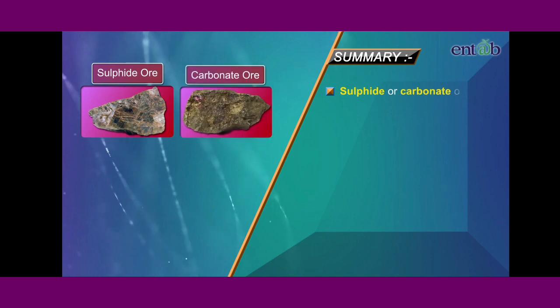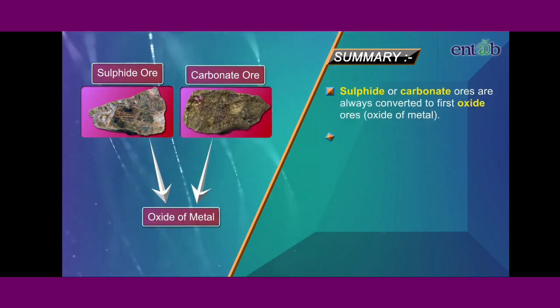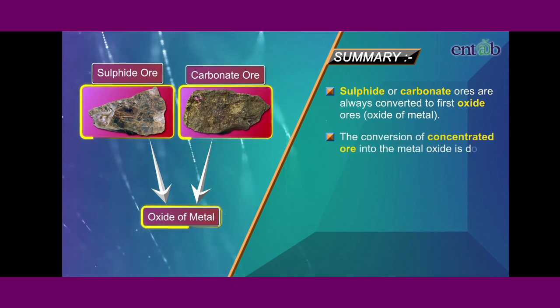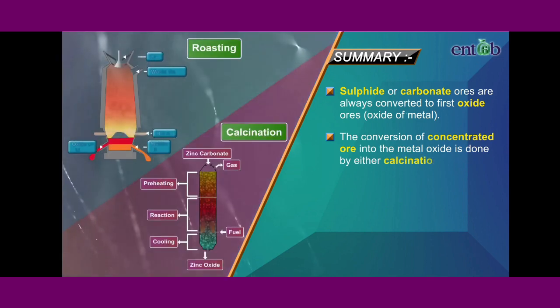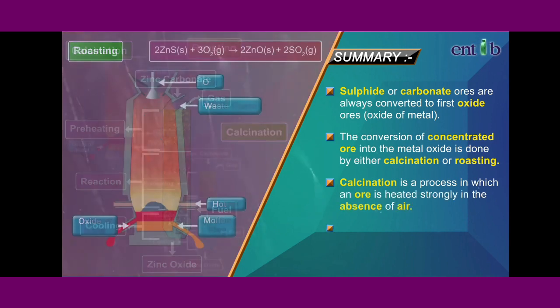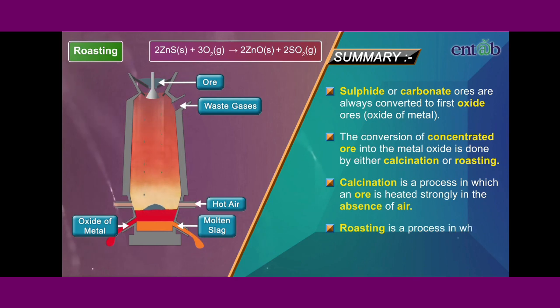Sulfide or carbonate ores are always converted to oxide ores first. The conversion of concentrated ore into the metal oxide is done by either calcination or roasting. Calcination is a process in which ore is heated strongly in the absence of air. Roasting is a process in which ore is heated strongly in the presence or supply of air.